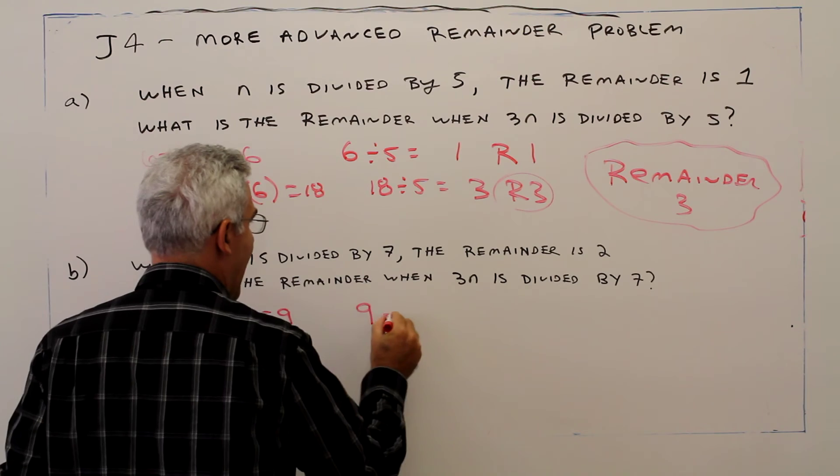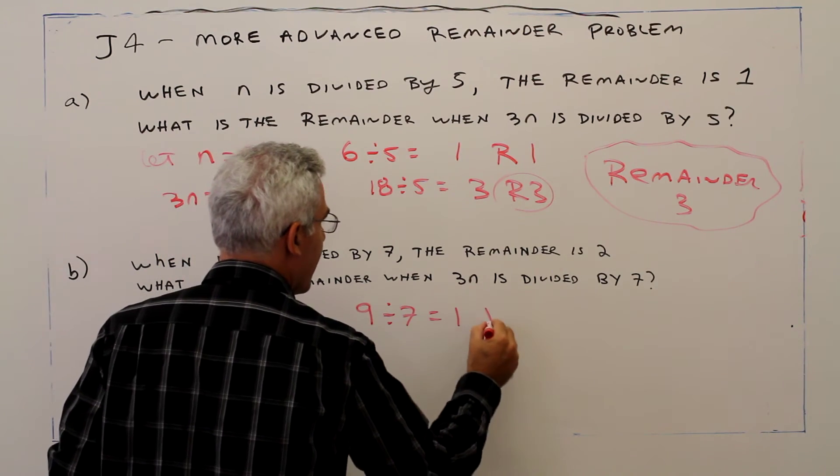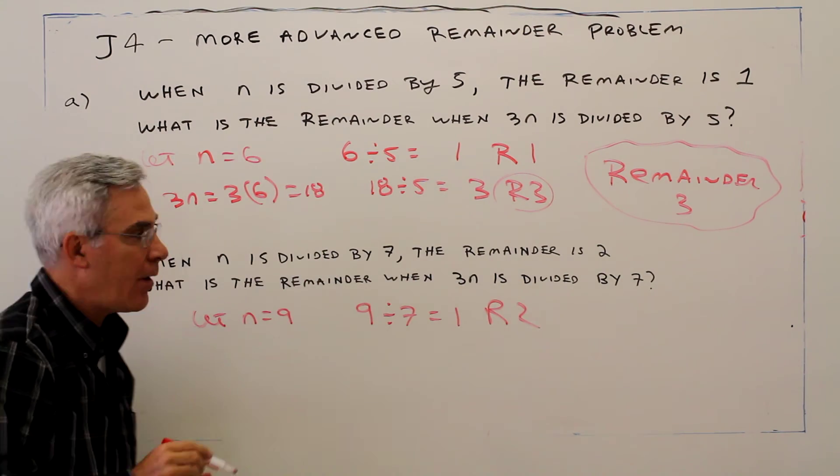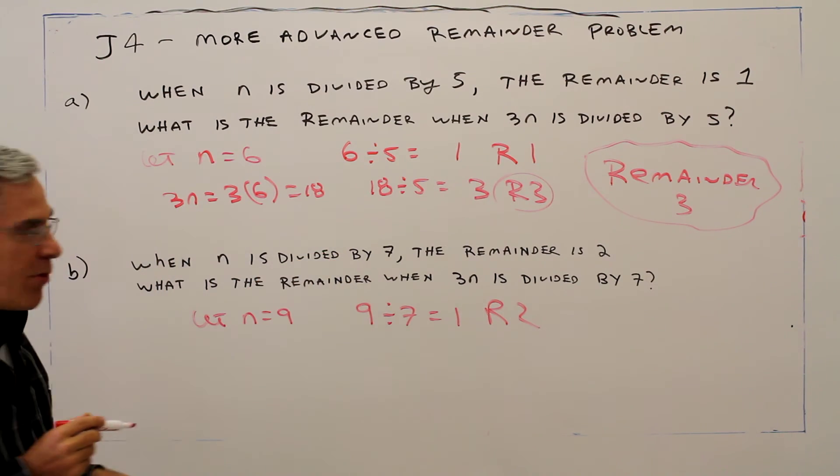9 divided by 7 equals 1, remainder 2. I've verified that first part. Now just 3n.